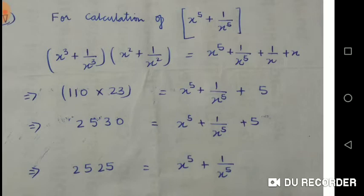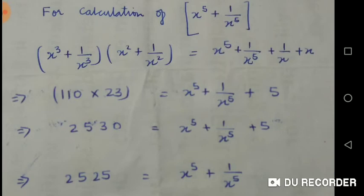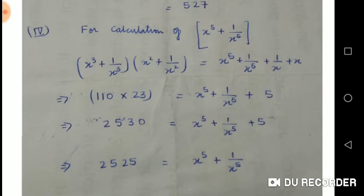Here you can see that x³ + 1/x³, x² + 1/x², and 1/x + x we already calculated. So by solving this one, we will get the answer of x⁵ + 1/x⁵ = 2525.